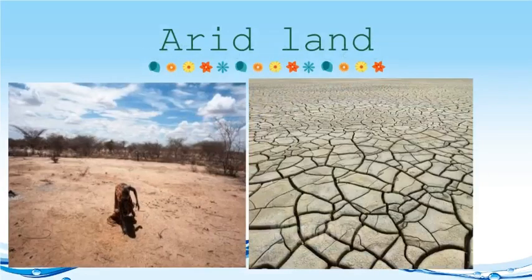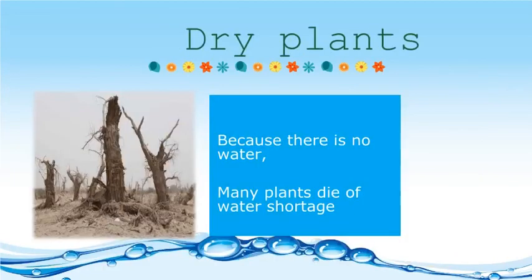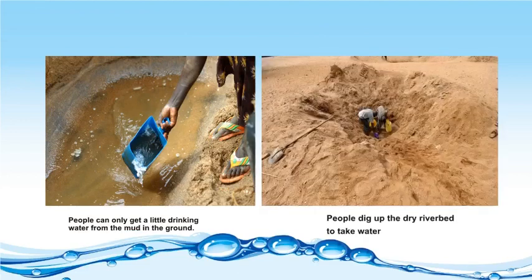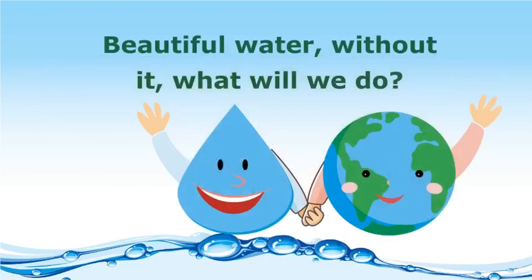Due to water shortage and constraints in water management, arid and semi-arid regions face disastrous consequences of water scarcity. Because there is no water, people can only get a little drinking water from mud in the ground. People dig up dry riverbeds to find water. What will we do without it?